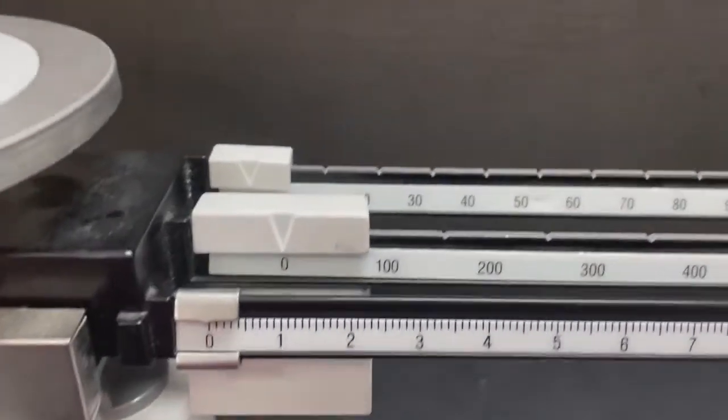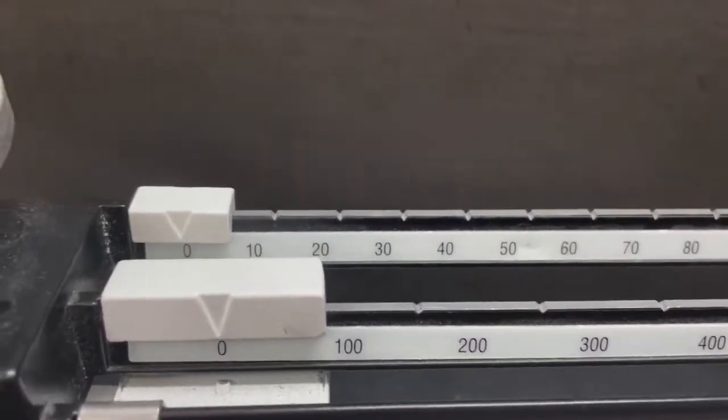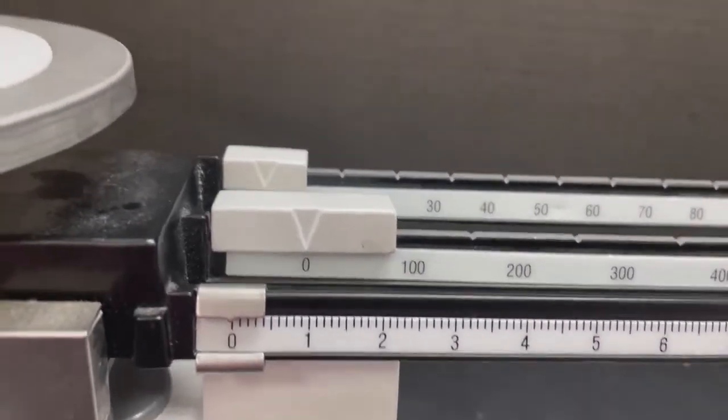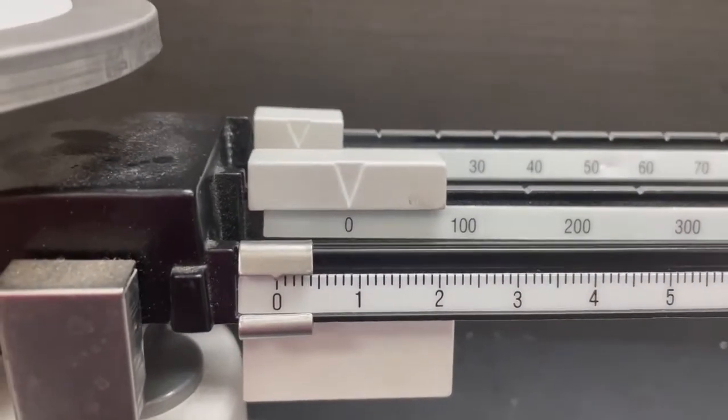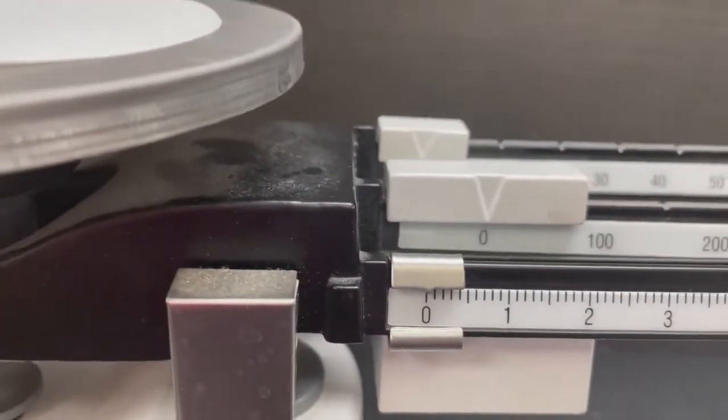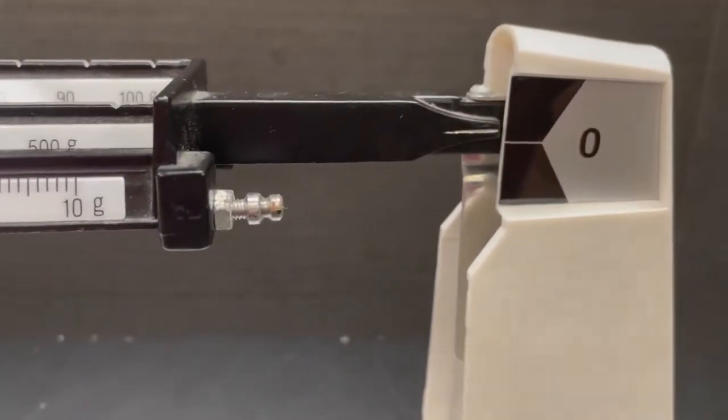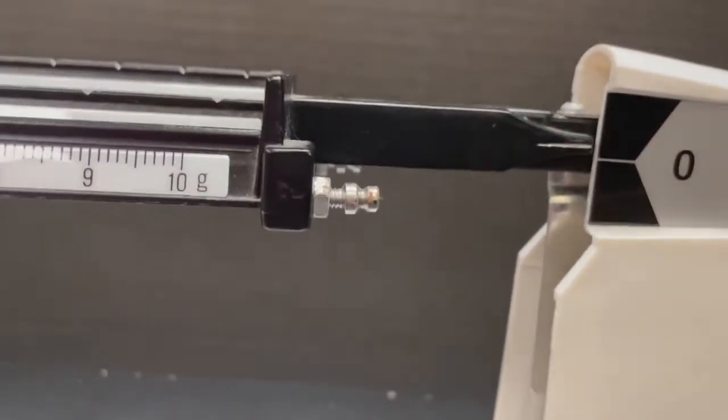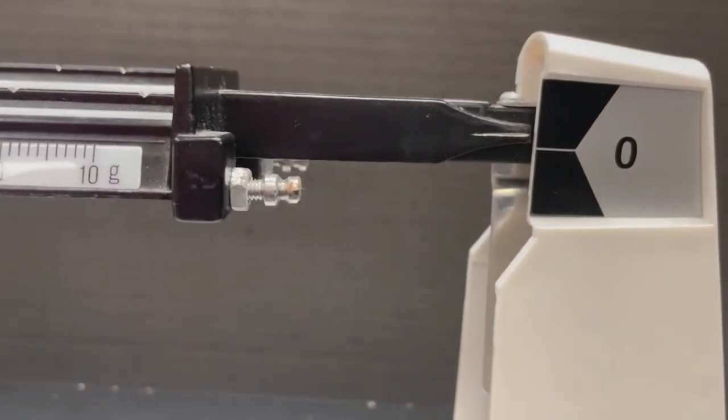Before we get started, we want to make sure that all of the weights on each of the beams is at the zero position. You want that to be where the pointer is pointing at the zero. Then, you want to go over and make sure that the pointer is actually pointing at zero to make sure that that is all lined up.